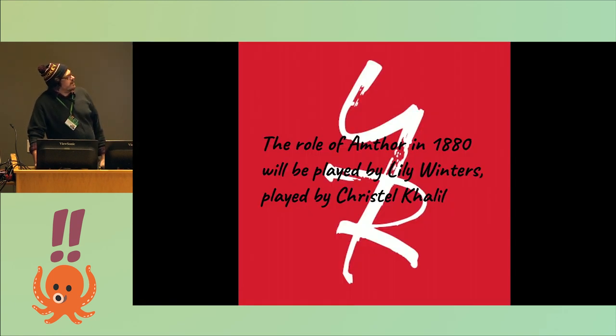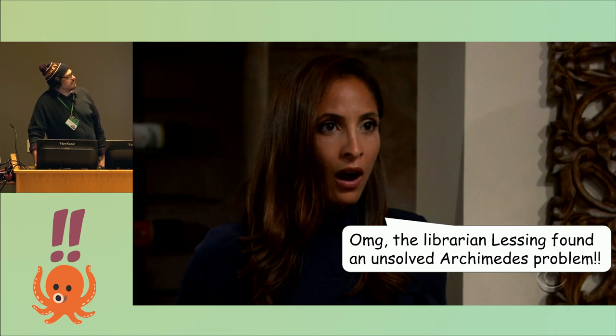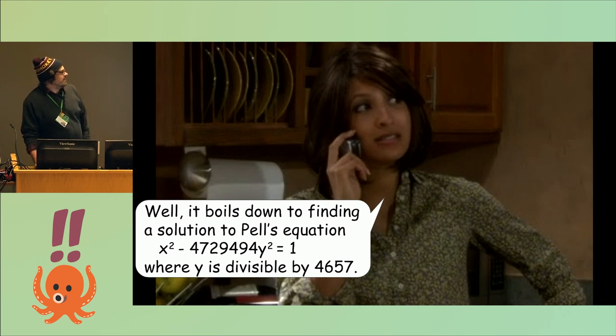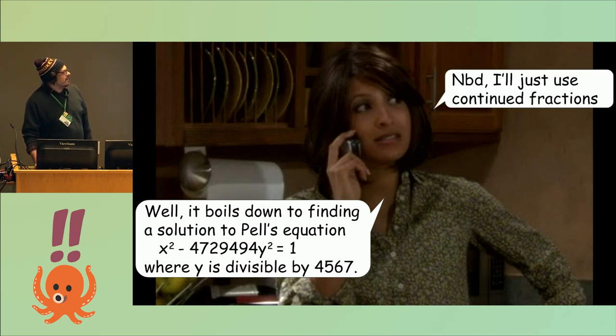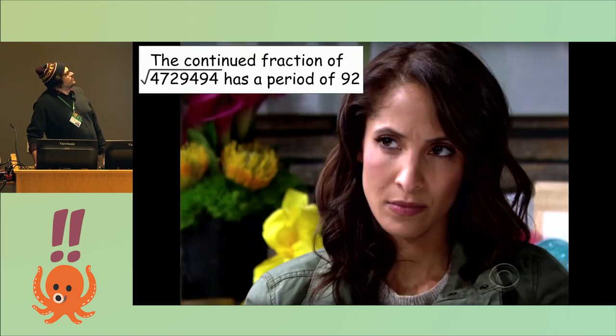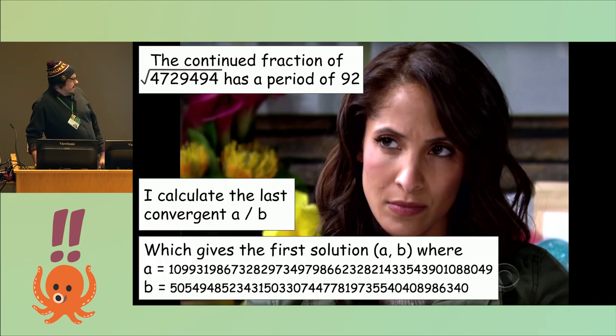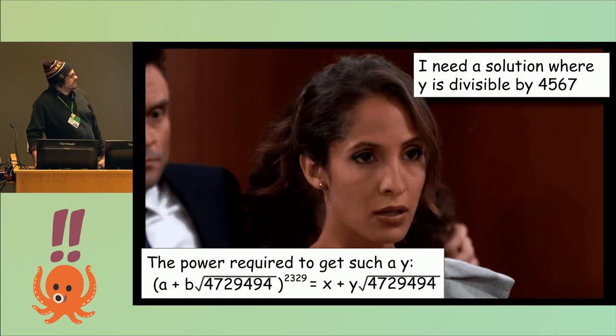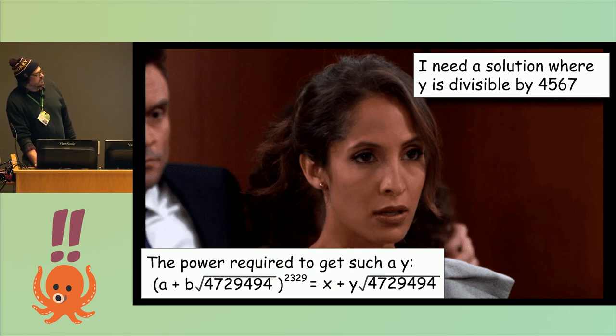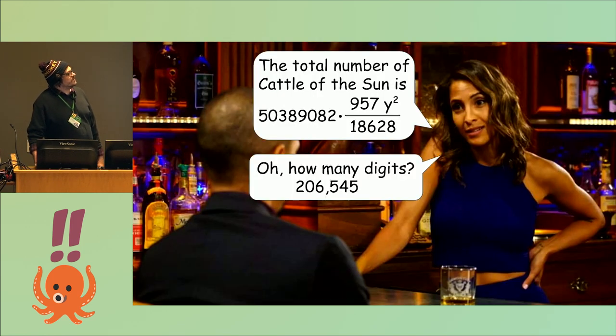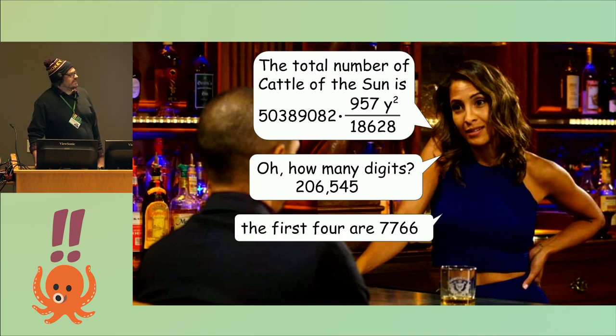Fast forward another 100 years and Amthor finds out about Archimedes' cattle problem, does all the same work and is like, hey, it's just a Pell equation and we know how to do that stuff now. So I'll just use continued fractions. It has a period of 92, so the last convergent in that list has this as the solution. But we need a y that's divisible by 4657, so we have to take the 2329th power of this thing, which is as you might guess, not computable by human. But anyways, he has this is the smallest solution. There's 206,000 digits and the first four of them are 7766.